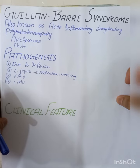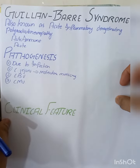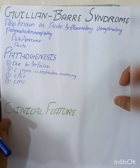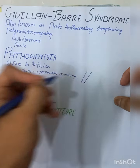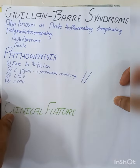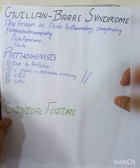The pathogenesis of this disease: it most commonly occurs due to an infection. We call it an autoimmune disease because whenever an infection occurs — such as Campylobacter jejuni, Epstein-Barr virus, or cytomegalovirus — there is molecular mimicry of these antigens with the neuronal antigens. The body releases antibodies from T cells and B cells, which cross-react with neuronal antigens.